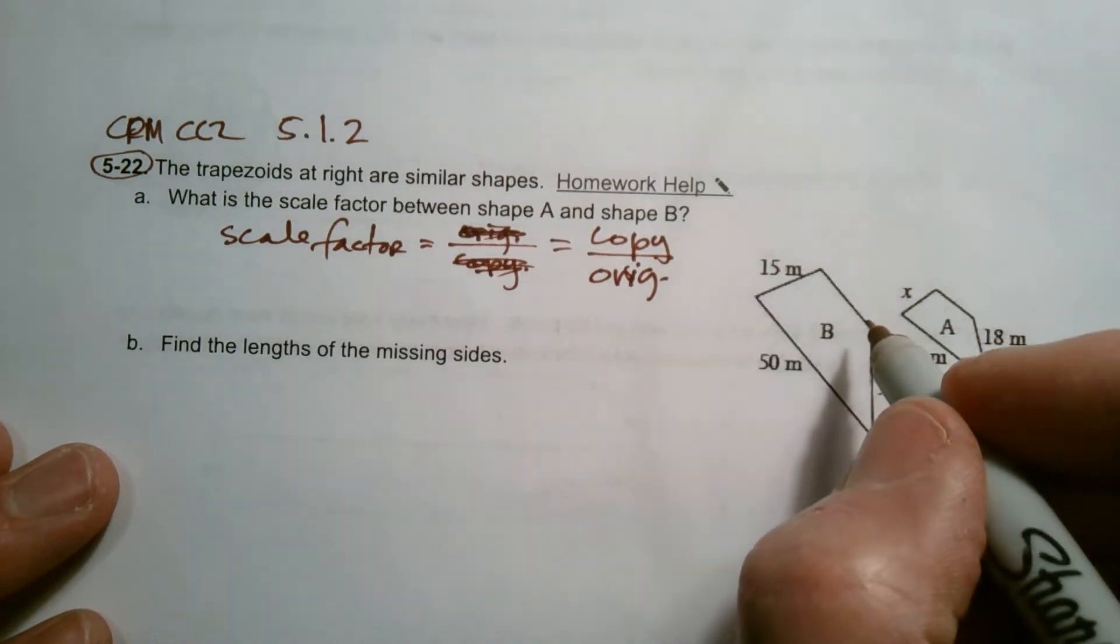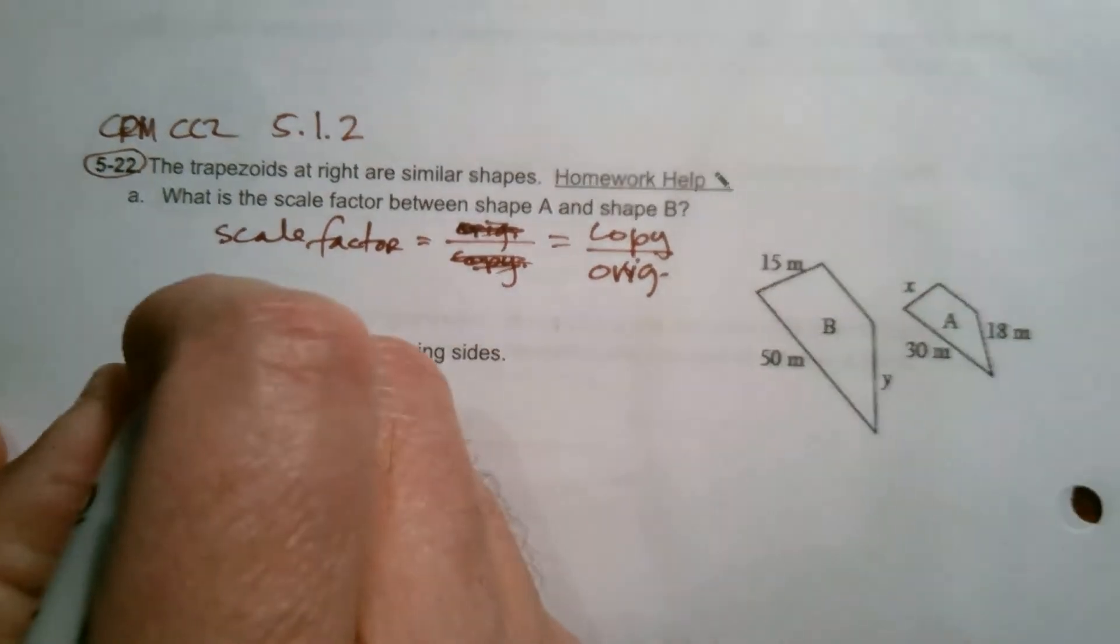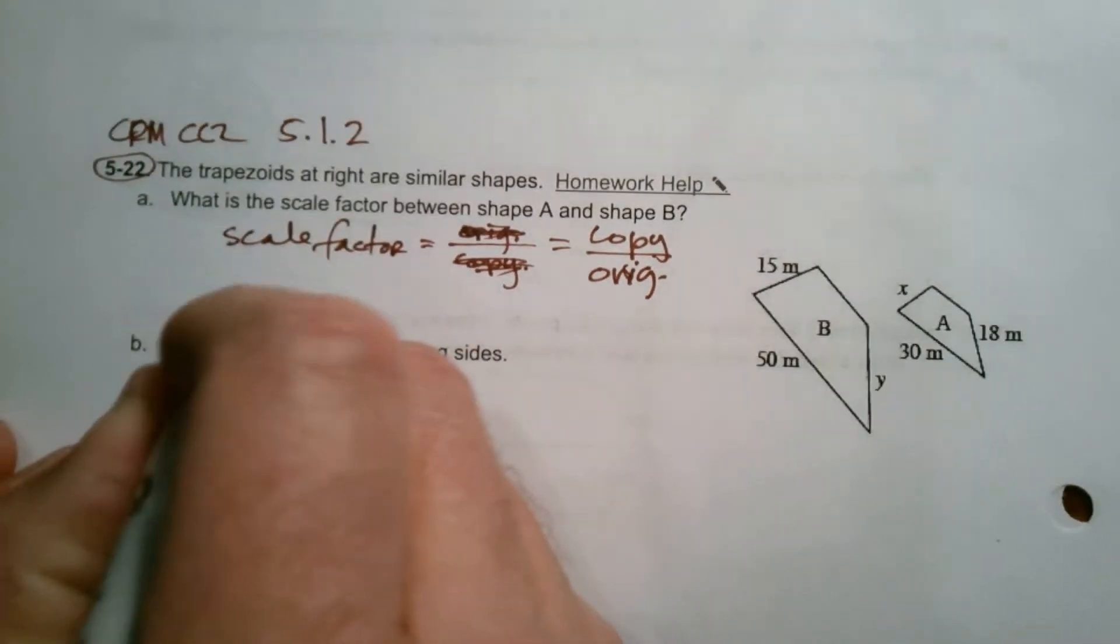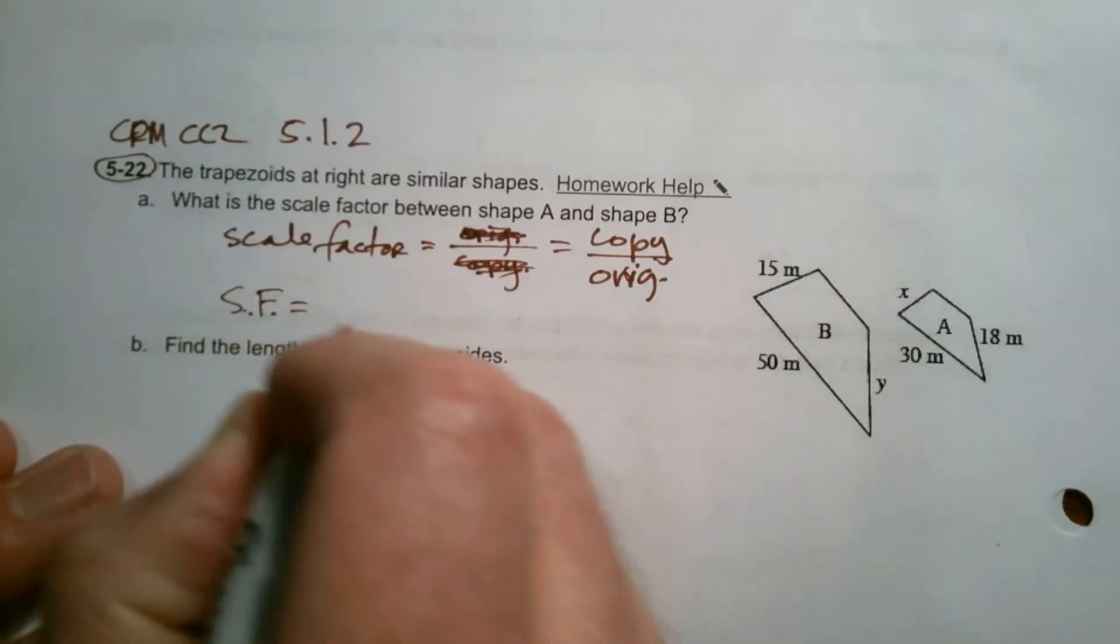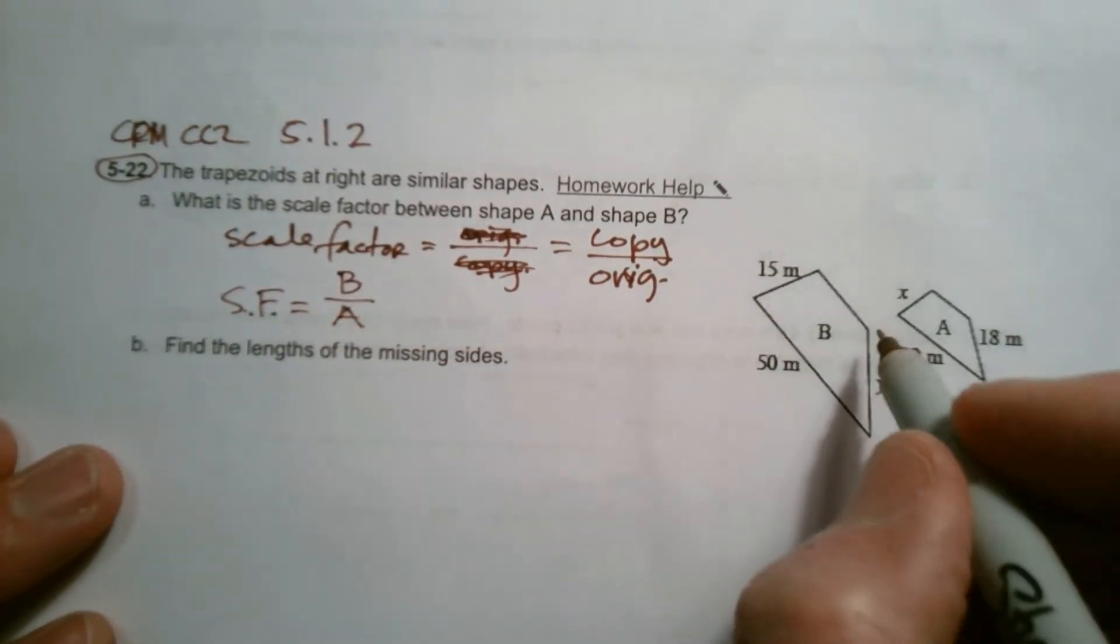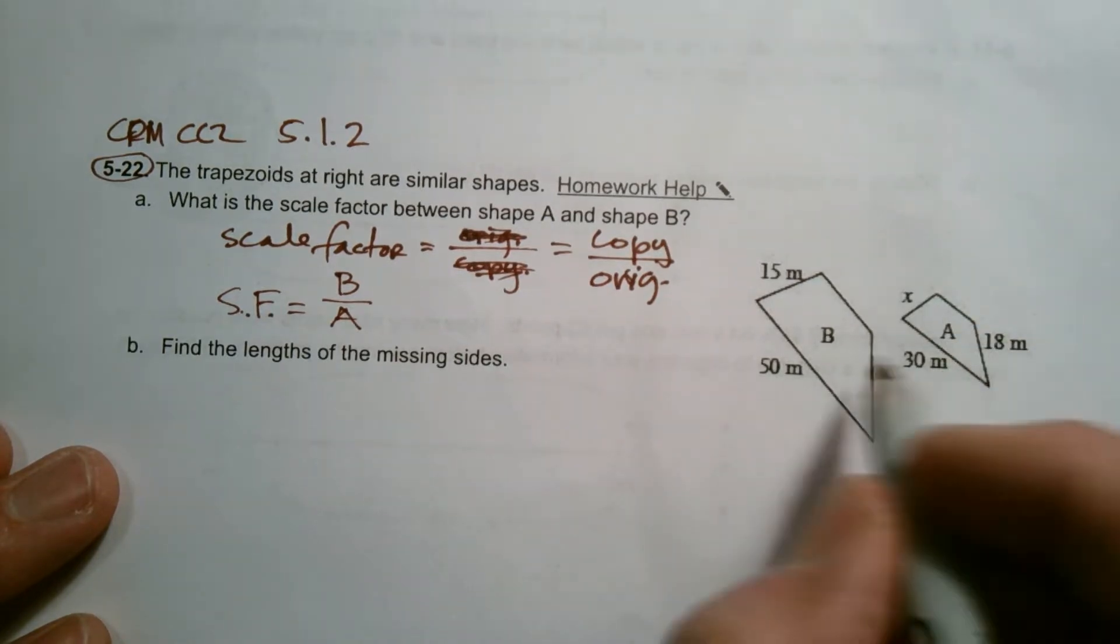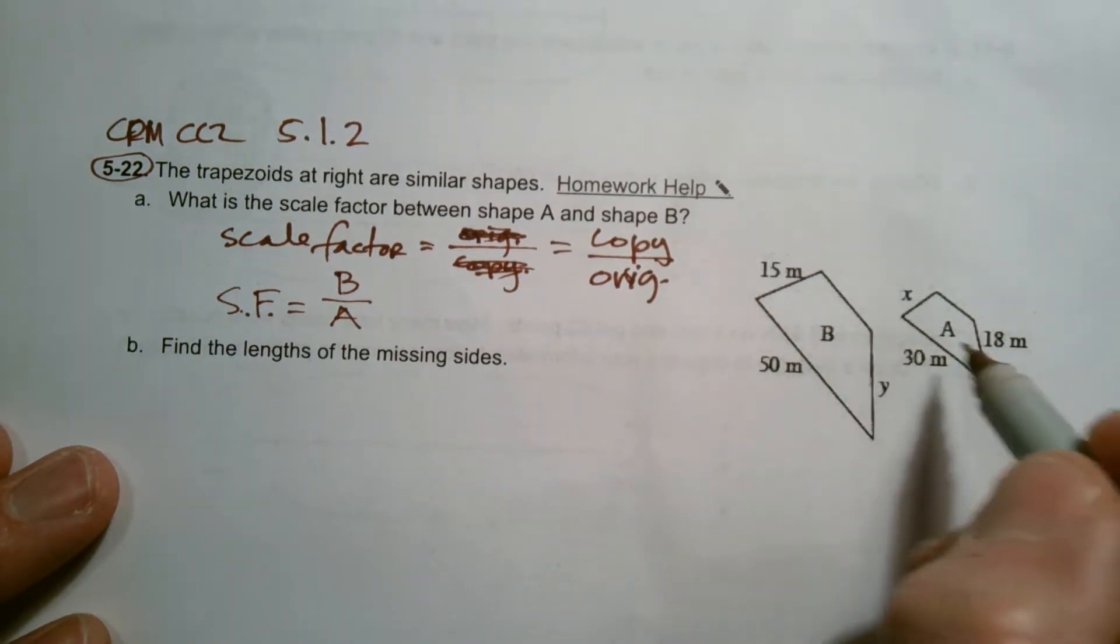So it's looking at the growth. My copy is B. So in this case, my scale factor, abbreviated S.F., is going to be something from B over A. One of the sides of B over A. That's going to tell me my growth. What is the growth?